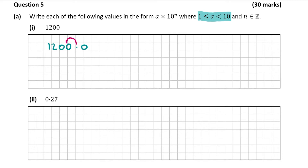I have to move the decimal point to the left three places so that it's between 1 and 2, and that will give me 1.2000. The zeros don't really matter — 1.2 is still 1.2000. The important thing is that I've moved the decimal point to the left three places, which means my power is going to be 3. So the n in this case is 3, as the decimal point moves three places.